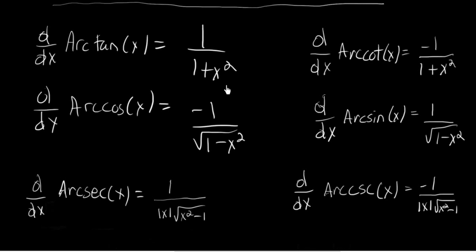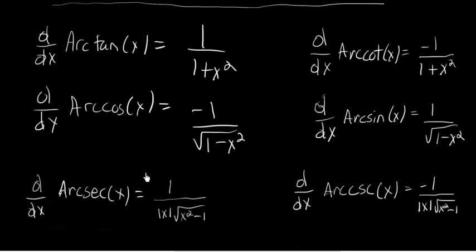What you should notice right off the bat is that each of these inverse co-functions are additive opposites of one another. For example, the arctangent of x is 1 over 1 plus x squared, while the arccotangent of x is minus 1 over 1 plus x squared. And the same is the case for arccosine and arcsine, as well as the arcsecant and arccosecant pair.